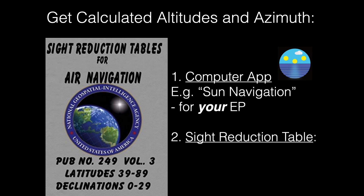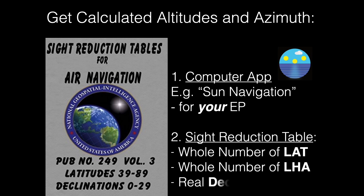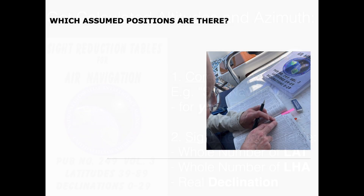From the sight reduction table, there is the azimuth — the direction to the sun — and the altitude that you should measure the sun at. But only for whole numbers of latitude, whole numbers of local hour angle, and real declination, meaning any declination up to 29 degrees. So how does this work? How do you choose the whole number of latitude and whole number of LHA? The whole number of latitude is often very easy, but the local hour angle is a bit tricky.